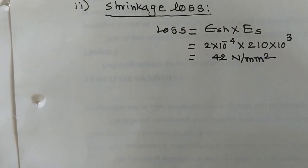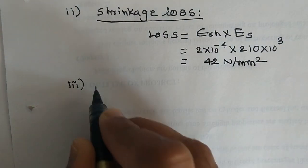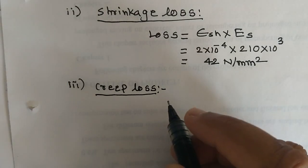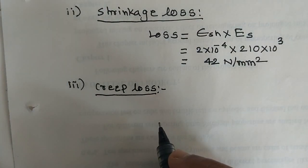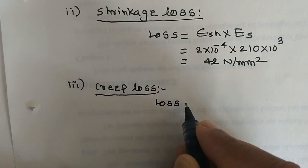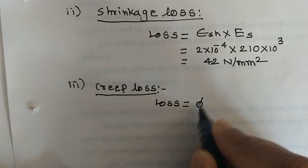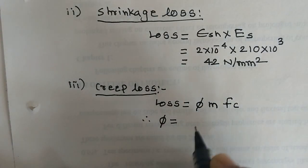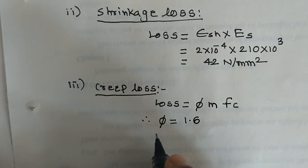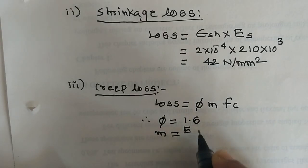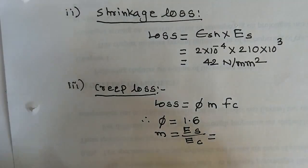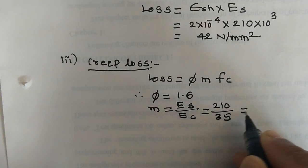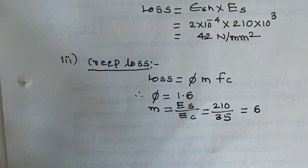Next is creep loss. Since the creep coefficient is given, use the formula: loss equals phi × m × fc. Creep coefficient phi = 1.6. Modular ratio m equals Young's modulus of steel divided by Young's modulus of concrete, which is 210 divided by 35, giving m = 6. Now we need to find fc, the stress in concrete at the level of the tendon.